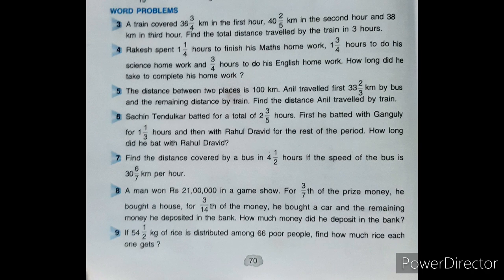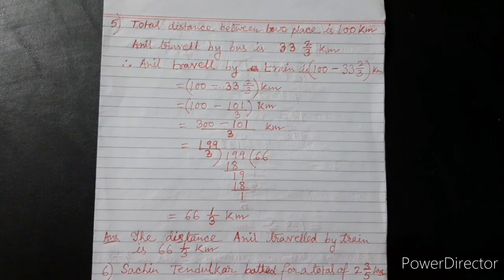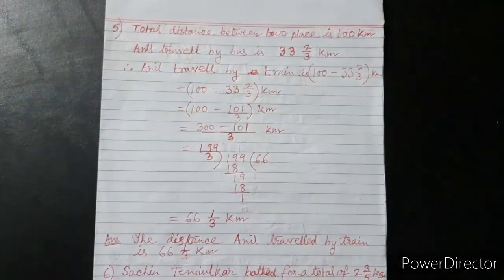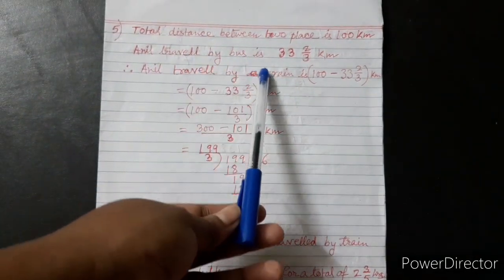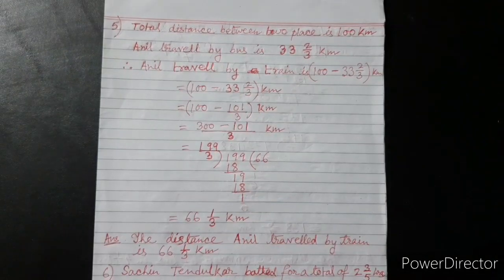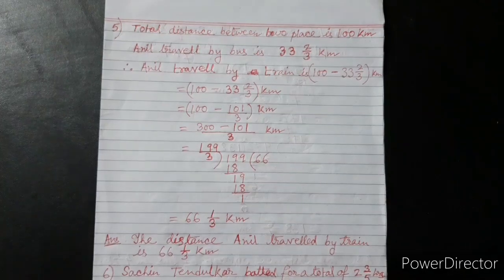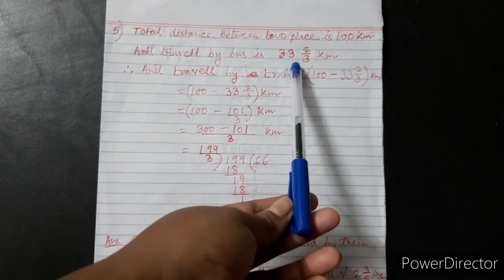The distance between two places is 100 km. Anil travelled first 33 and 2/3 km by bus and the remaining distance by train. Find the distance Anil travelled by train. So, total distance between two places is 100 km. Anil travelled by bus is 33 and 2/3 km. Therefore, Anil travelled by train is this minus this, kyunke itna distance toh bus mein gaya.